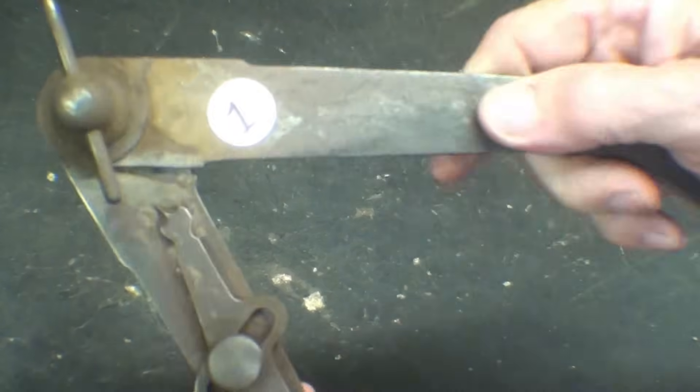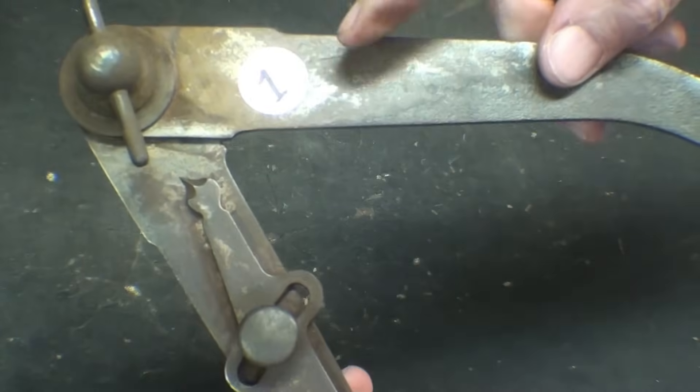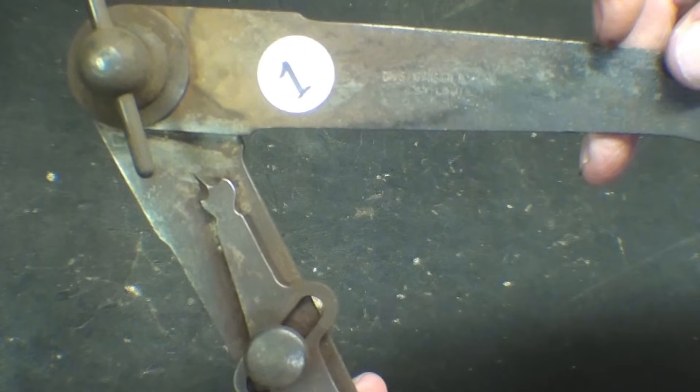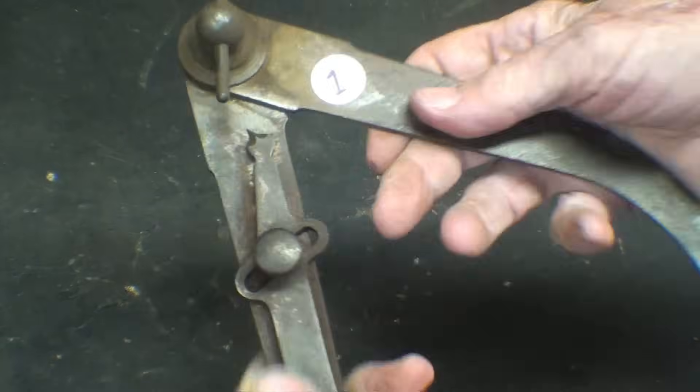But it is marked right here, but it's very, very hard to read. I had to use a magnifying glass and it says Davis Expansion Boring Tool Company, St. Louis, Missouri. So that's the maker.